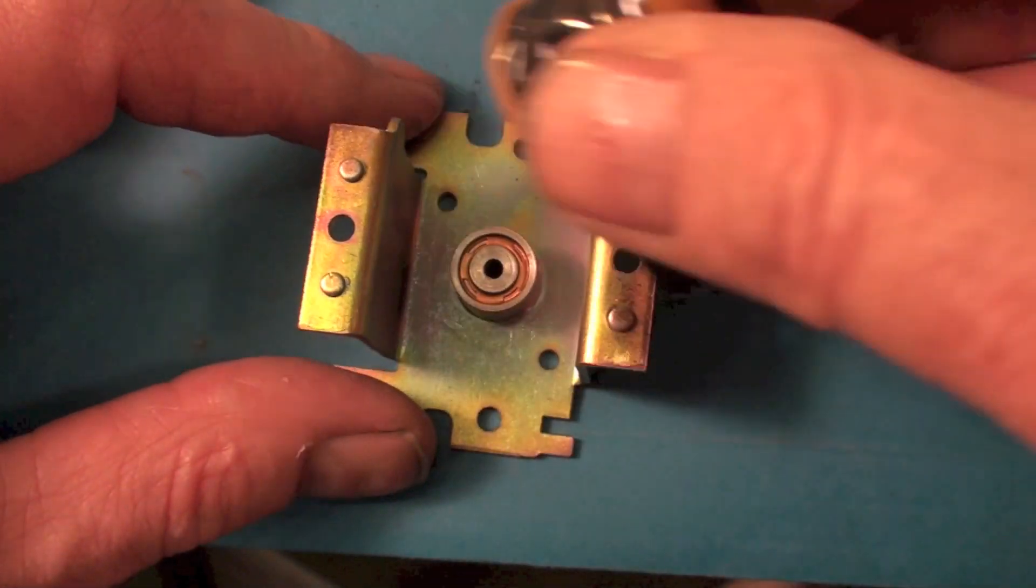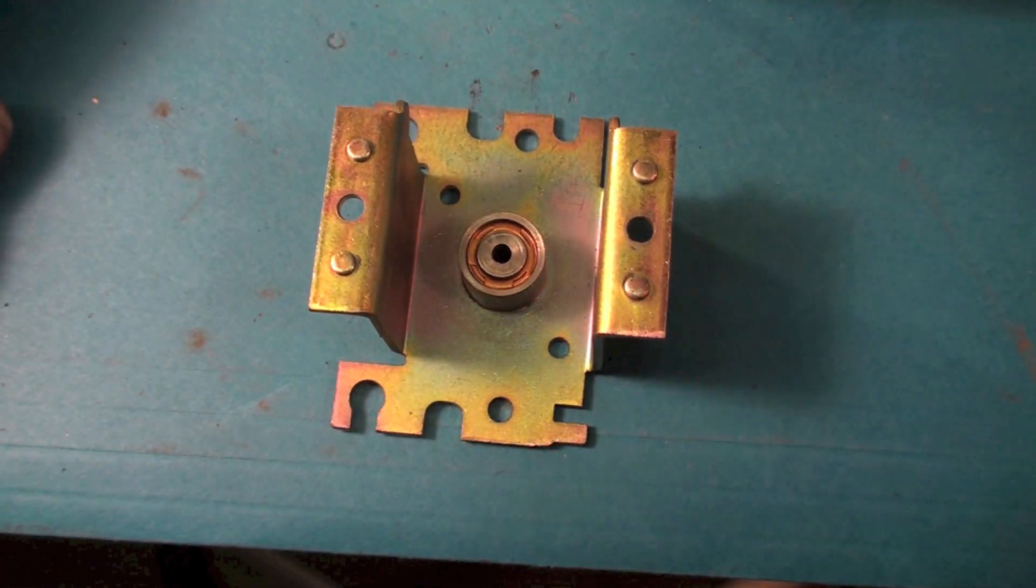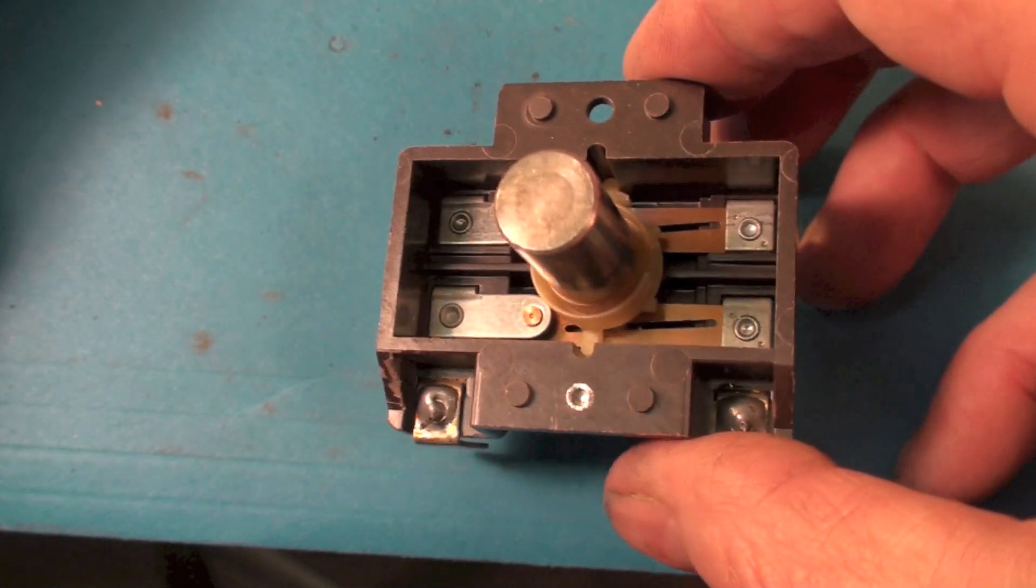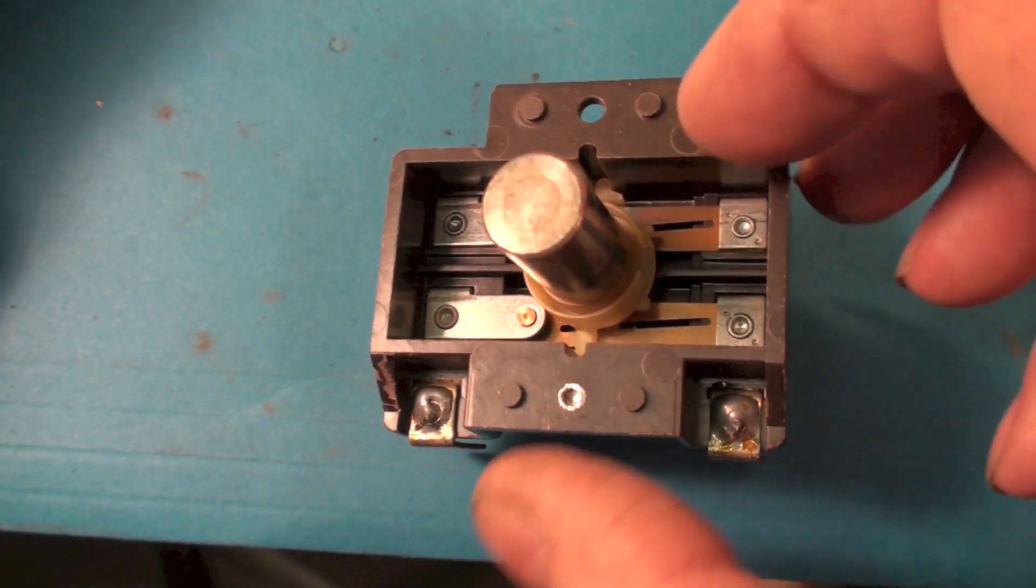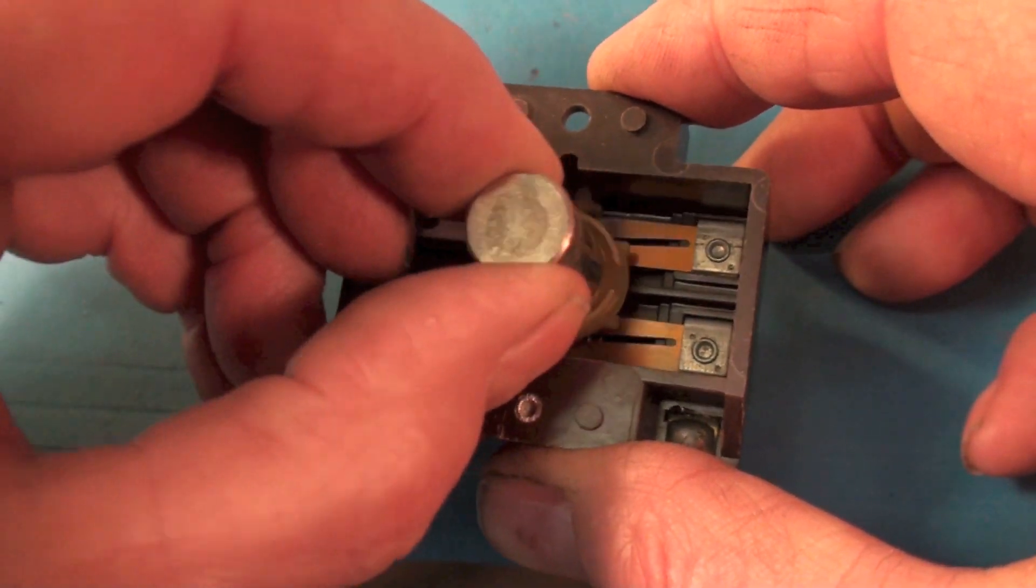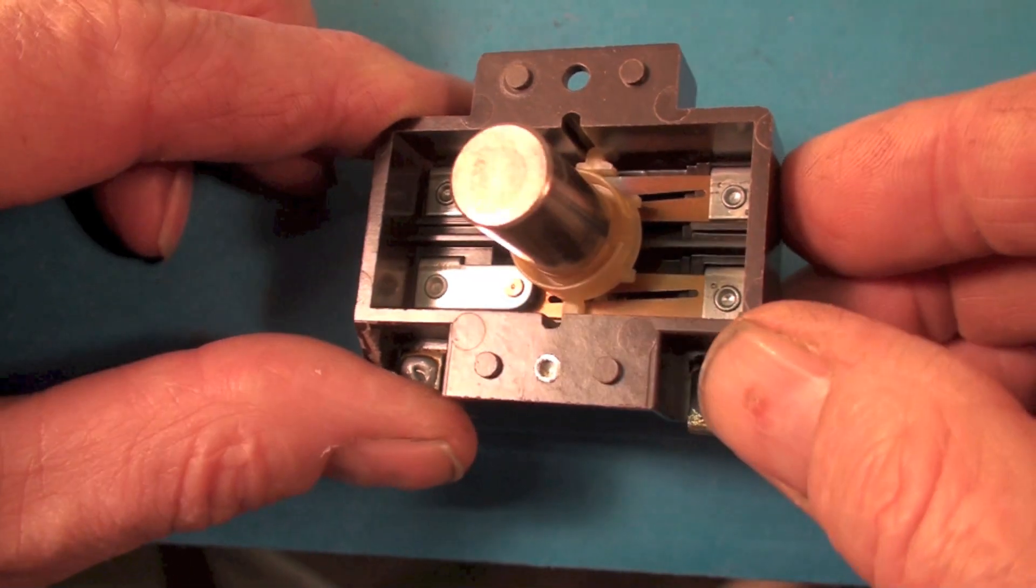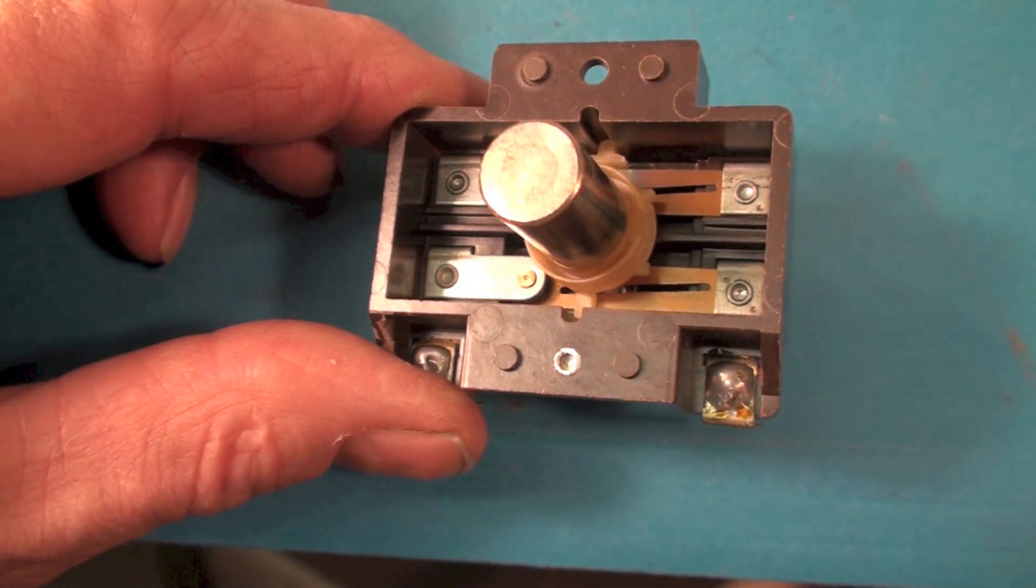Coil right here. This is the iron bar that moves up to move these back and forth. These are a little harder to see.